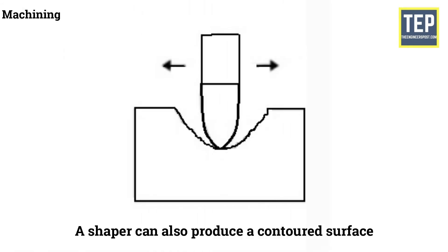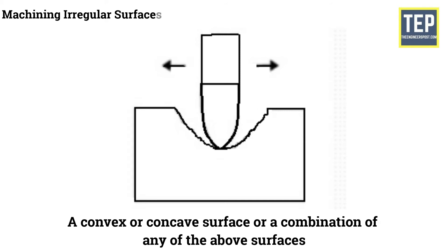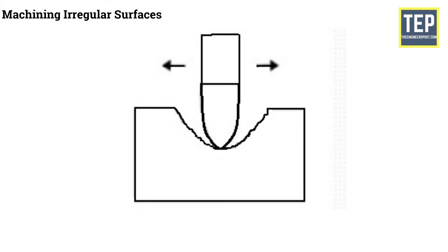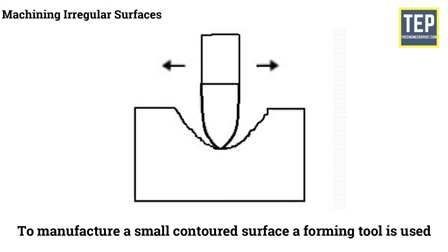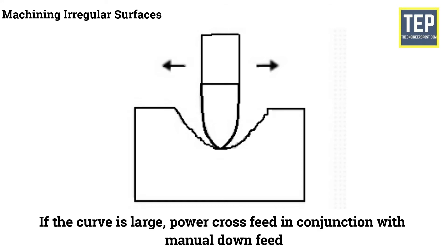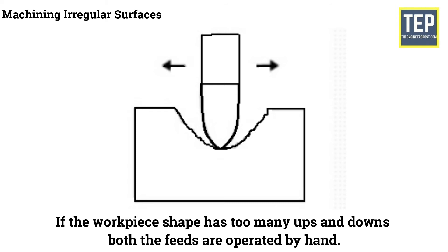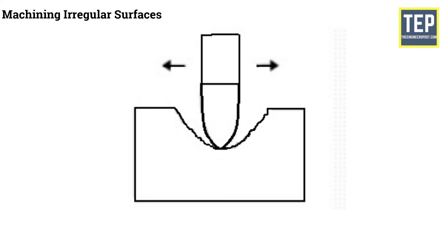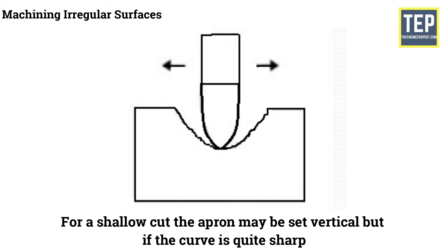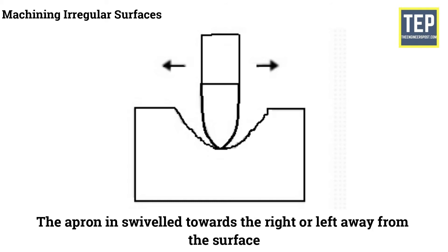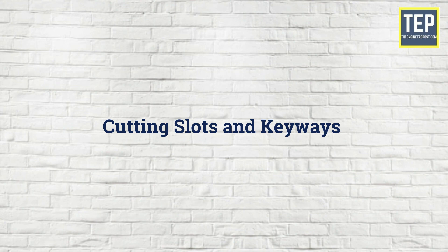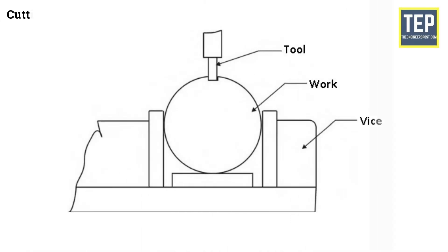Machining irregular surfaces: a shaper can produce a contoured surface — convex, concave, or a combination. To manufacture a small contoured surface, a forming tool is used. If the curve is large, power cross feed is used in conjunction with manual down feed. If the workpiece shape has many ups and downs, both feeds are operated by hand. A round nose tool is used for shallow cuts; the apron may be set vertical, but if the curve is quite sharp the apron is swiveled towards the right or left away from the surface.